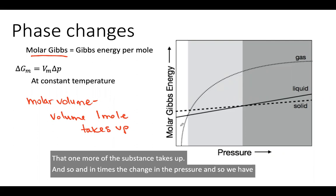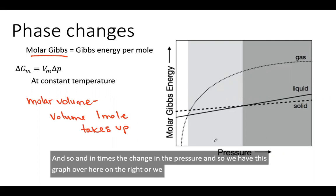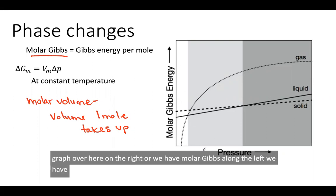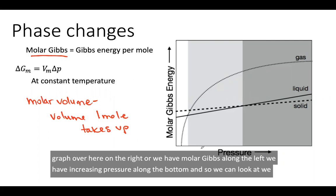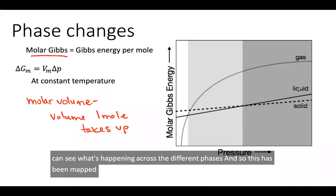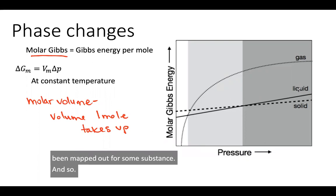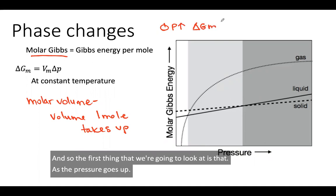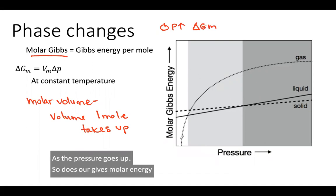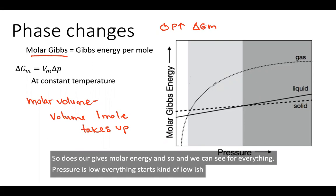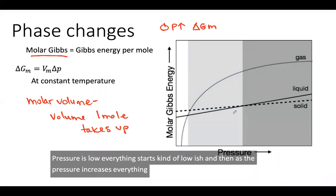We have this graph over here on the right, where we have molar Gibbs along the left and increasing pressure along the bottom. We can see what's happening across the different phases. The first trend that we're going to look at is that as the pressure goes up, so does our Gibbs molar energy. We can see for everything, when pressure is low, everything starts kind of low, and then as the pressure increases, everything starts to go up.